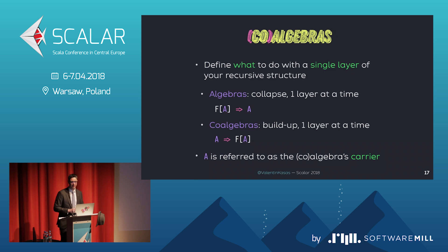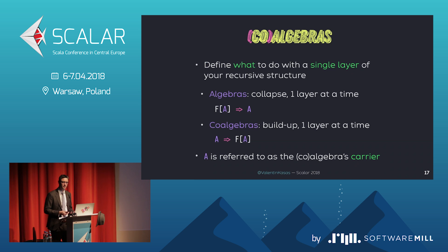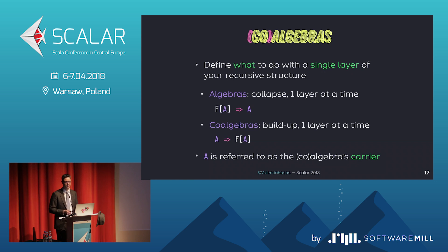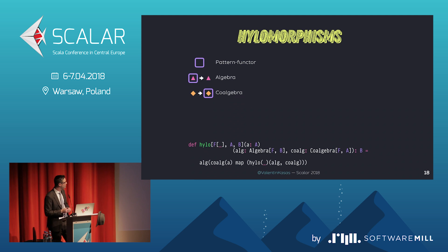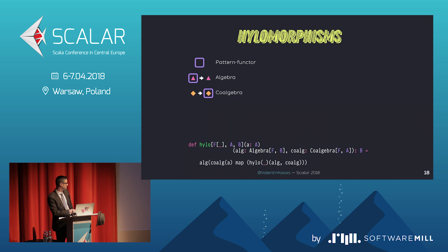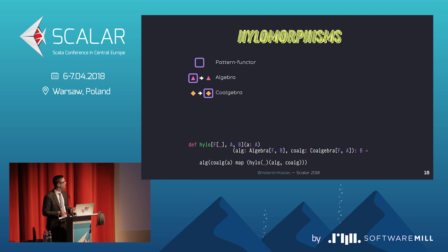Algebras are simply functions from F of A to A, and they collapse one layer at a time of your structure. When you put 'co' in front of a word you reverse the arrows, so a co-algebra is just a function from A to F of A, and it builds up one layer at a time. The A type is often referred to as the carrier of your algebra — useful to know if you want to chat on the Matryoshka Gitter channel. The most basic recursion scheme — every other one is built around this one — is called hylomorphism. Given an algebra and a co-algebra, hylomorphism is a function from A to B that goes through your recursive structure.